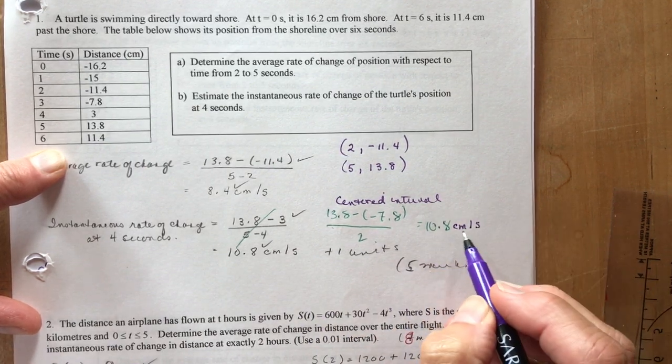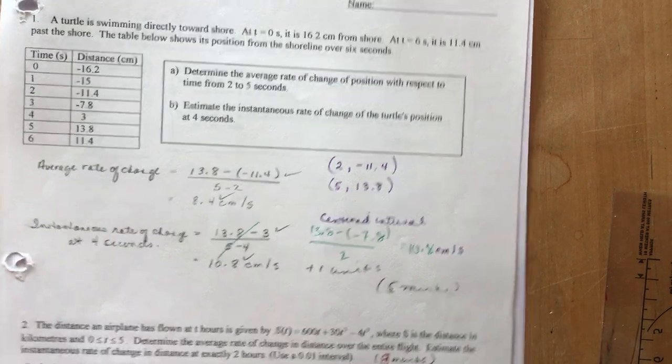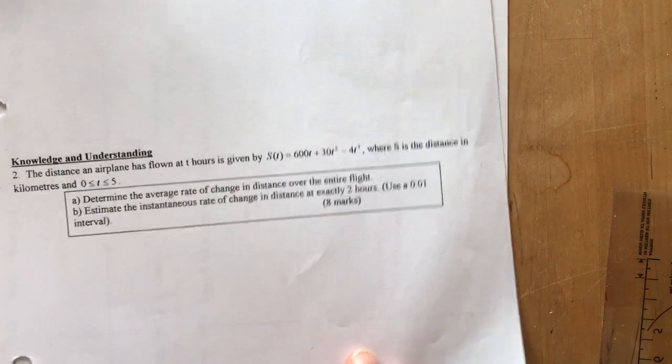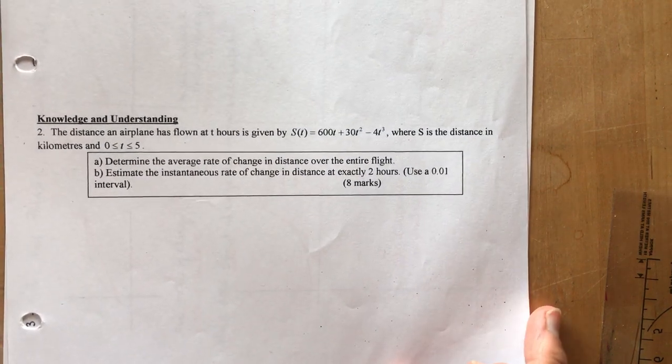I used the following interval, so I used 13.8 minus 13.3 over 5 minus 4, and I got 10.8 centimeters per second. See, the units, very important. And when I did a centered interval I also got centimeters per second. Let's look at question 2. Again, if you want to try this on your own, you can stop right now, take a look at it, freeze frame.